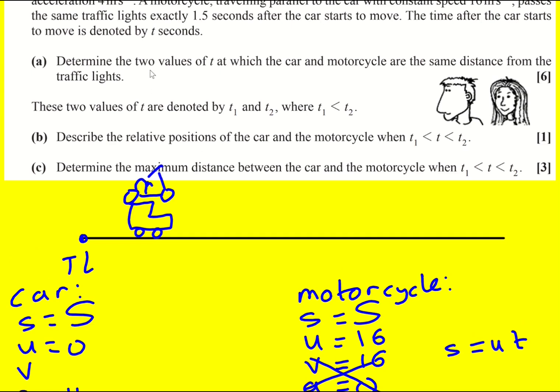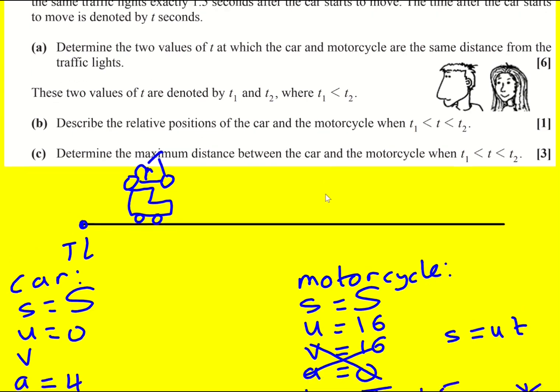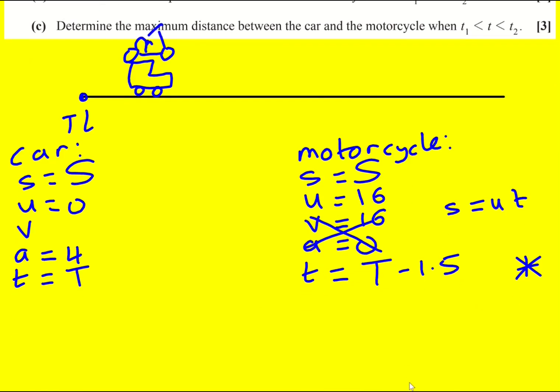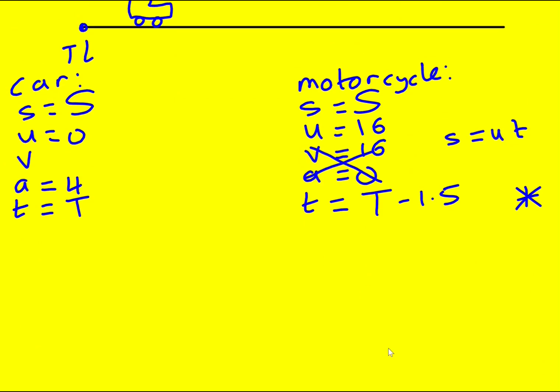Whatever the time it takes the car to get to S, like 8 seconds, it will take the motorcycle 1.5 seconds less, 6.5 seconds. Because it's like its clock started at a later point. So that's critical. And we can use that now to determine the values of t. Because I can write down some equations. Over here, obviously I can only use this one.